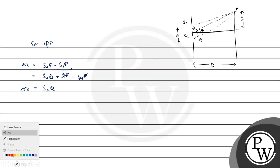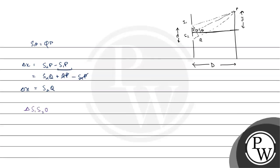In triangle S1, S2, Q, the value of sin theta equals S2Q over small d. Therefore, S2Q equals d sin theta. As the slits are taken very close together, theta becomes very small, and when theta tends to zero, sin theta is approximately equal to theta.